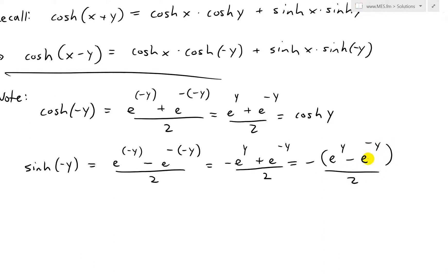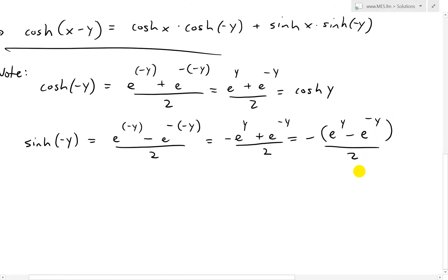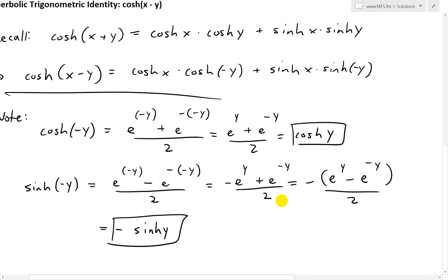And the reason we're doing that is now that's just a definition of sinch. Now we have this equals to negative sinch y. So we have sinch negative y equals negative sinch y, and cosh negative y is the same as just cosh y. So thus,